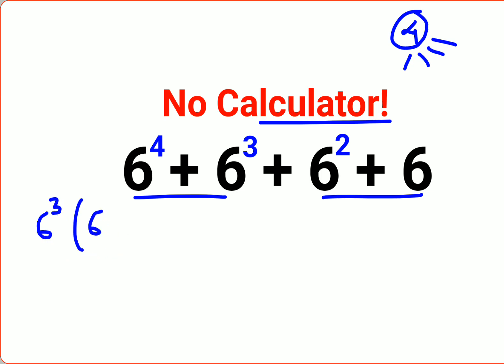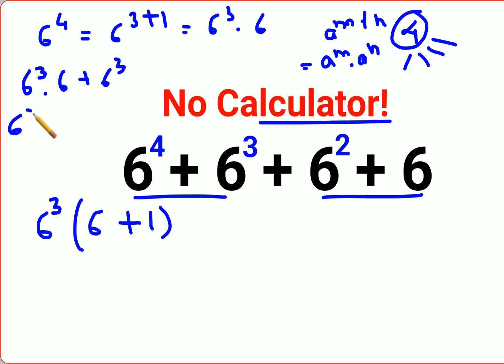Now, how did that happen? See, 6⁴ is written as 6^(3+1). And as we know, a^(m+n) can be written as a^m × a^n. So this can be written as 6³ × 6. So when I do 6³ × 6 + 6³, I can very conveniently take 6³ outside, and I'm just left with 6 plus 1.